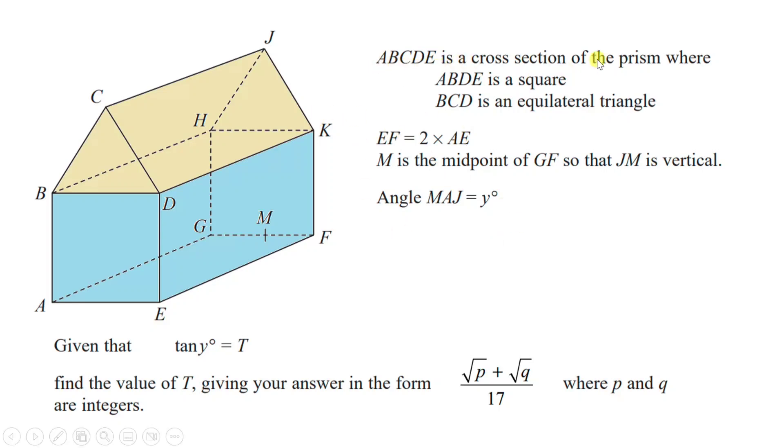ABCDE is a cross-section of the prism where ABDE is a square, BCD is an equilateral triangle. They tell us EF is 2 times AE. So suppose this length here was just X, which is labeled X for a second. That means EF over here would be 2 times X. It would just be double.